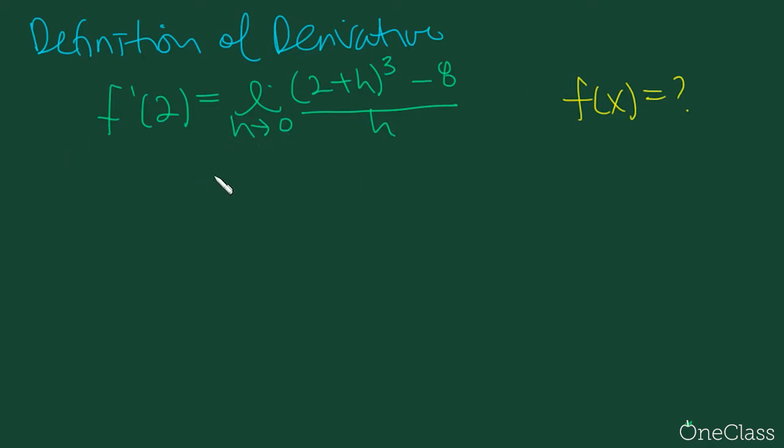So h approaching zero. You know that whenever it comes to the definition of derivative, it equals limit h approaching zero, f at x plus h, notice this is a derivative, which is equal to the regular function minus f at x over h.